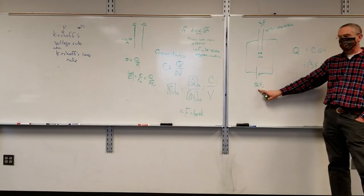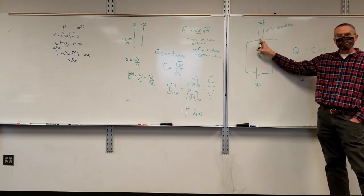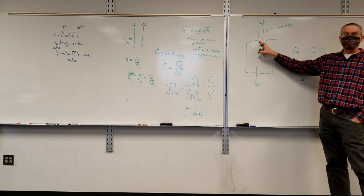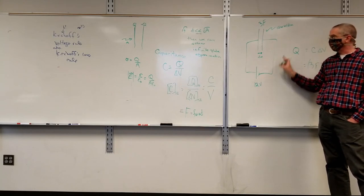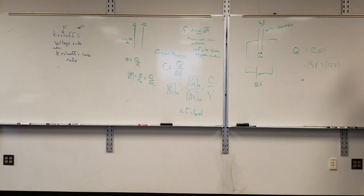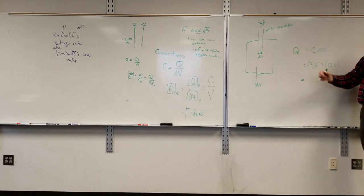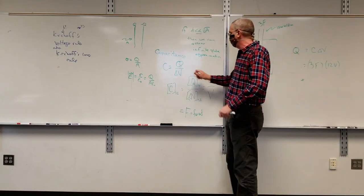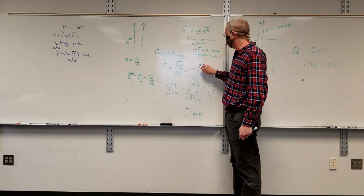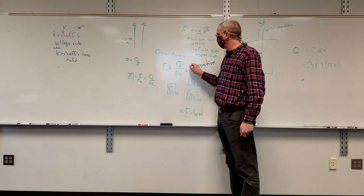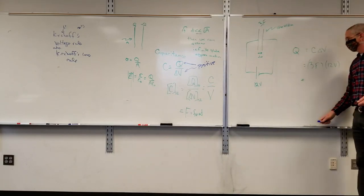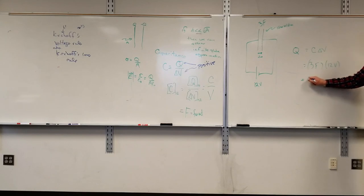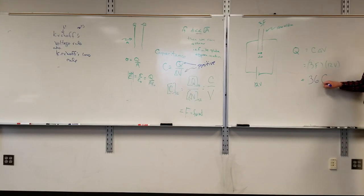The 12 volts is not because the battery is 12 volts per se, but because across the capacitor is 12 volts. If I gain 12 going one way, I lose 12 going the other. The voltage in the capacitance formula is always a positive number, so I'm not worried about positive or negative 12 volts. 3 times 12 is 36 coulombs. Surface charge density is charge divided by area — 36 coulombs divided by 100 square meters — giving a surface charge density of 0.36 coulombs per square meter.